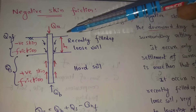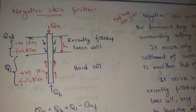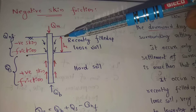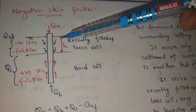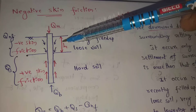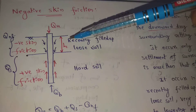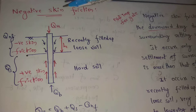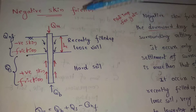The soil surface has recently filled-up loose soil. The top layer has loose soil, so a certain length (LC) will be considered. Here, negative skin friction starts, and this is called QNF.